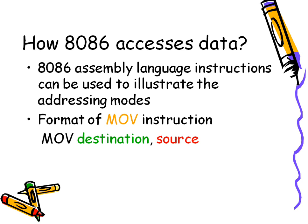An instruction format contains an opcode and a number of operand fields. The opcode specifies what kind of operation the processor has to perform. There can be 0, 1, or 2 operand fields. Here we have the example of a 2-operand instruction where MOV is the opcode, destination is one operand, and source is the other. We will use MOV to understand all addressing modes.